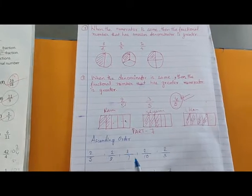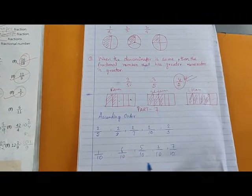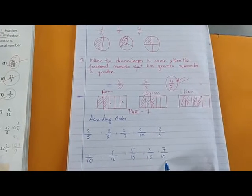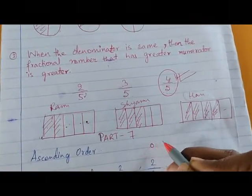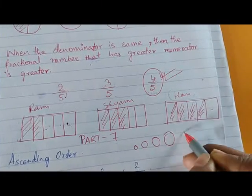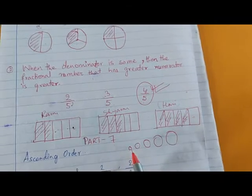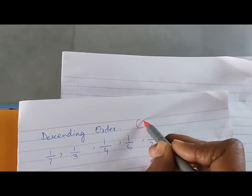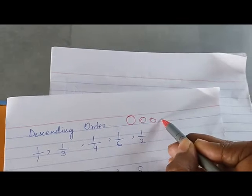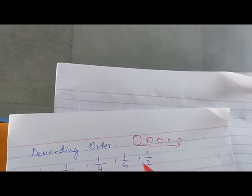In the first question I have taken those fractional numbers where the numerators are same, and in the second question I have taken such fractional numbers where the denominators are same. Ascending order means we have to arrange the numbers from smaller to bigger — chote se bada. And in descending order we have to arrange from the greatest to the smallest — bada se chota.